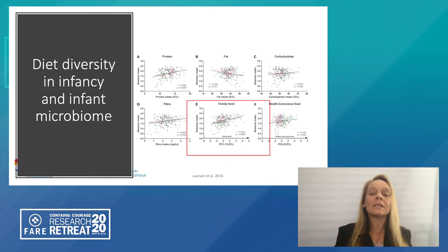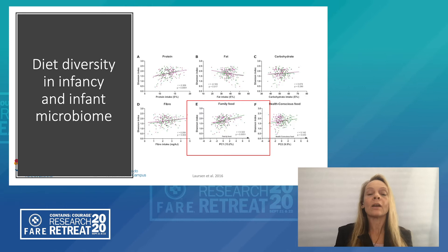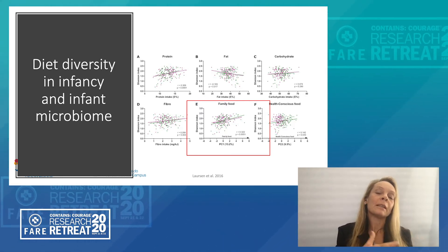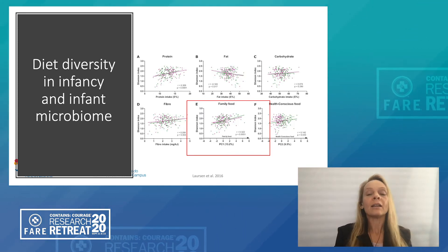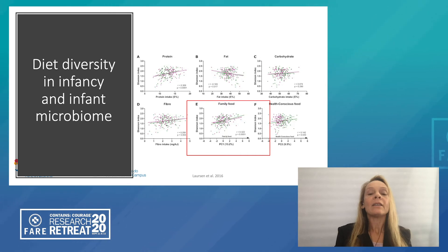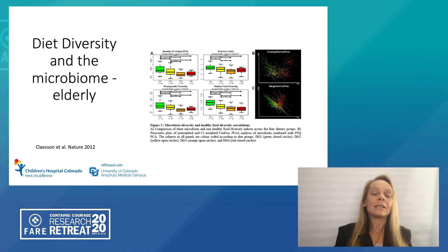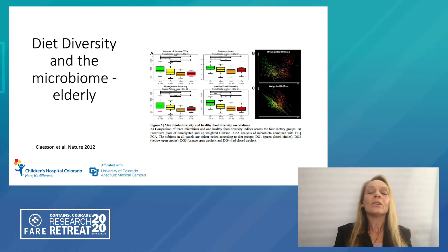We can also look at the infant's diet in the first year of life. Interestingly, in the study by Lawson et al., they showed that as diet diversity increased in the first year — as the child was eating more family foods, slowly moving from a predominantly breast milk or formula diet — the gut microbiome diversity also increased, measured using the Shannon index as a measure of alpha diversity. This is not just relevant to infants but also to the elderly, and this was published in Nature almost eight years ago — still one of the only studies looking at diet diversity and gut microbiome diversity in adults.